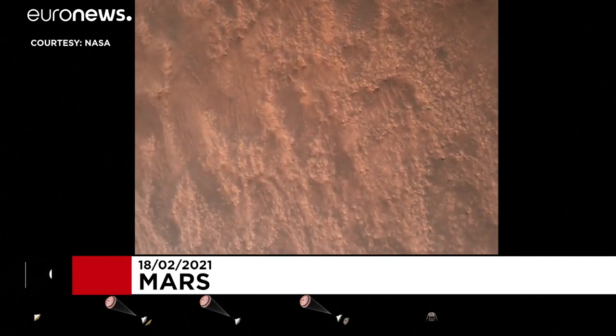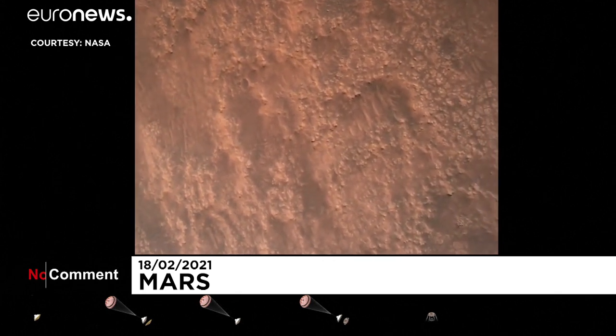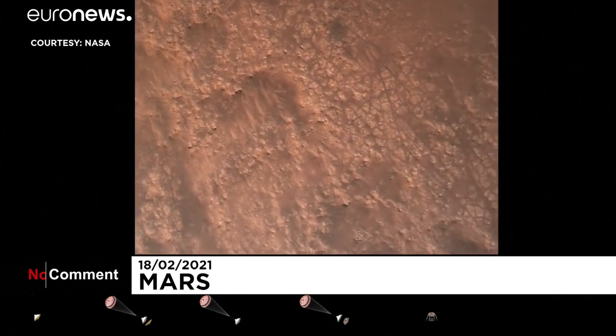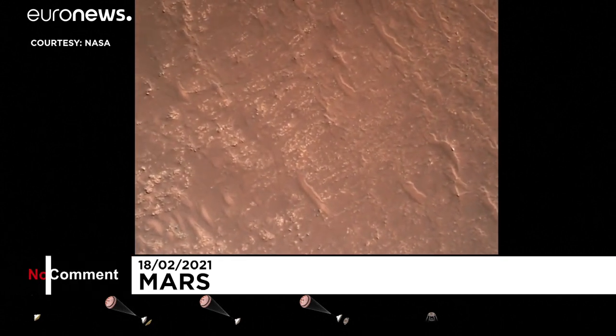T-R-N safety, Bravo. We have completed our terrain relative navigation. Current speed is about 30 meters per second, altitude of about 300 meters off the surface of Mars.